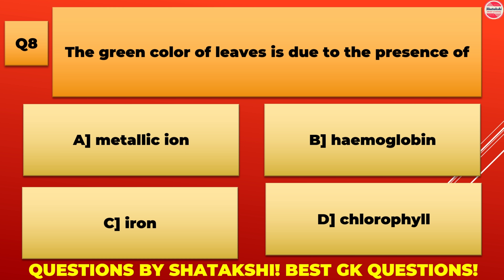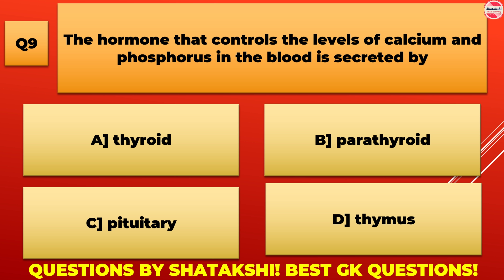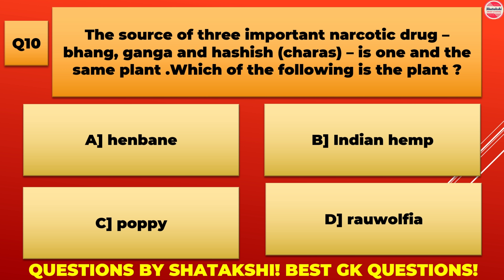The hormone that controls the level of calcium and phosphorus in the blood is secreted by: A. Thyroid, B. Parathyroid, C. Pituitary, D. Thymus. B. Parathyroid is the correct answer.